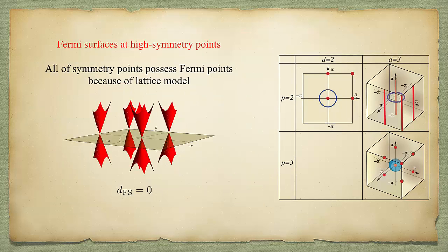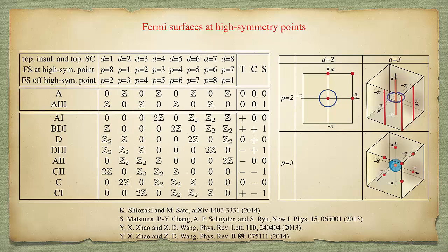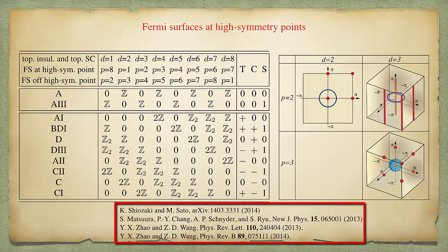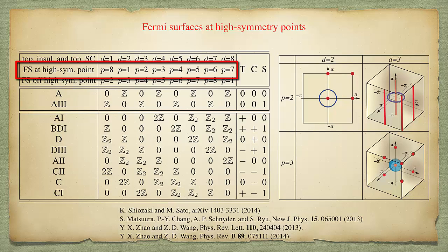The second possible location of Fermi surfaces is high symmetry points. In a lattice model, all symmetry points possess Fermi points. For example, in a two-dimensional square lattice system, four symmetry points must have four Fermi points in this case. According to the listed references, the topology of the Fermi surface at high symmetry points is classified by different codimension p, as shown in the second column.